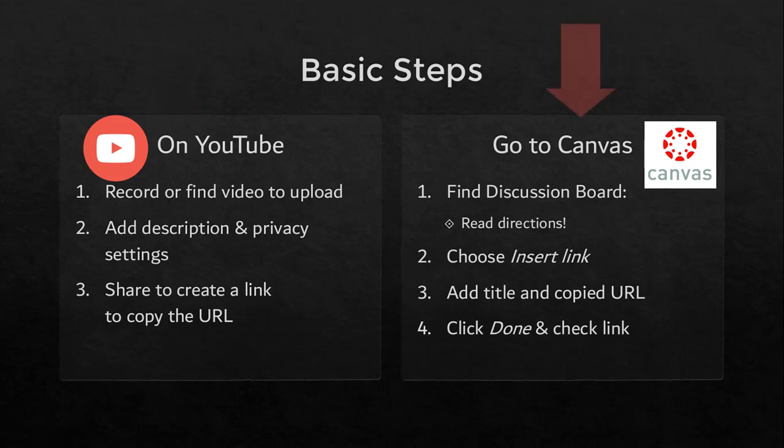Now we go into Canvas — you navigate to find the discussion board you want, and of course you're going to read the directions. You'll choose insert link, and at that point you'll be able to add a title and then the URL that you copied when you were in YouTube — the one that's on your clipboard. Then you're going to click done and check the link to make sure it works. Let's see how it looks in pictures.